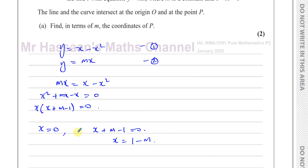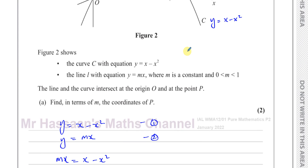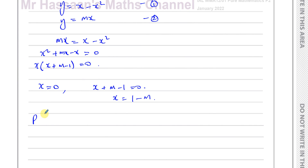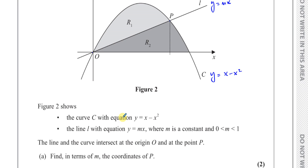Those are the x coordinates of where the line and curve intersect. One of them is at the origin, which we don't want. So point P has x coordinate 1 minus m. For the y coordinate, using the simpler equation y equals mx, we get y equals m times 1 minus m. Therefore the coordinates of P are (1 minus m, m times 1 minus m). That is the answer for part A.